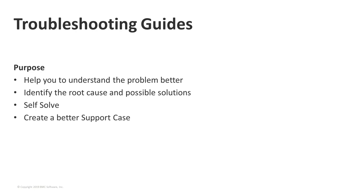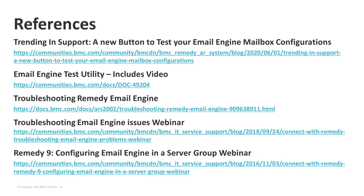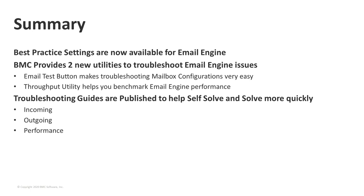That concludes our discussion and demonstrations for the Email Engine Performance Best Practices, Test Button, and Troubleshooting Guides. The links to documentation and other references included in this webinar have been gathered on a reference page to make it easier to find them. In summary: we're glad to announce the Email Engine Performance Best Practice Settings and Configuration; two great new utilities — the Test Button for confirming mailbox configuration and the Throughput Analyzer for evaluating outgoing email performance; and the Email Engine Troubleshooting Guides for incoming, outgoing, and performance are now published and ready for use. Check the troubleshooting guide pages often as additional pages will be published soon.